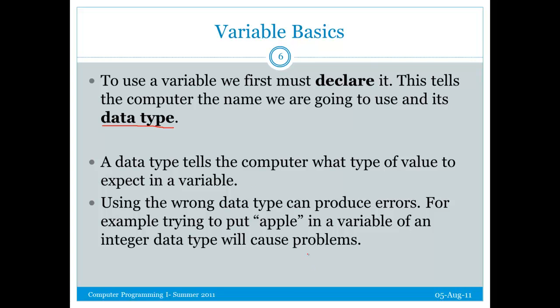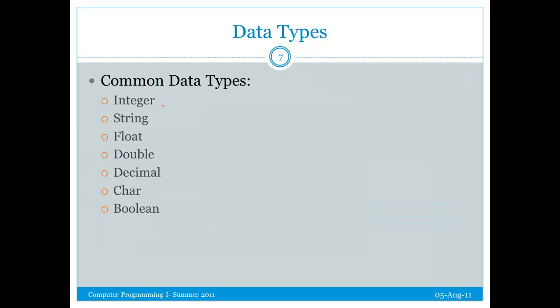We can't declare a data type of integer and then put apple in as a value. That will cause problems. Apple is not an integer, obviously, it's a string. Okay, so common data types in Visual Basic: Integer, string, float, double, decimal, char, which is short for character, and Boolean. Boolean only has two values, true or false. This will become important in our later discussion of decision-making structures, if statements.